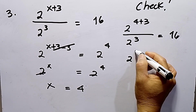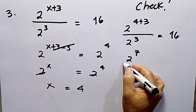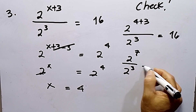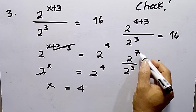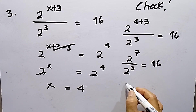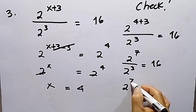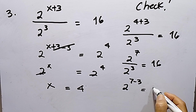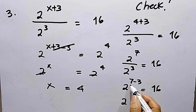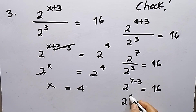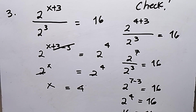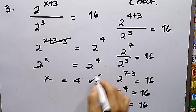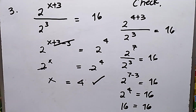This becomes 2 to the 7th power over 2 to the 3rd power equals 16. Since the numerator exponent is greater than the denominator, we subtract: 2 raised to the power of 7 minus 3. Since 7 minus 3 is 4, this is 2 raised to the 4th power, which equals 16. And indeed 2 to the 4th power is 16 equals 16. Therefore, number 3, x equals 4, is correct.